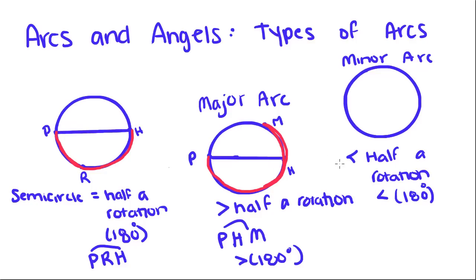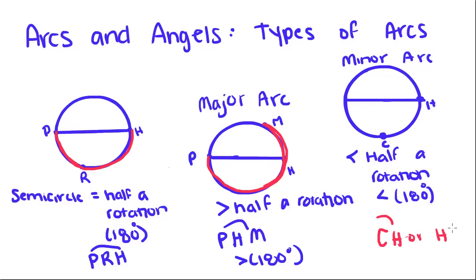And a minor arc is less than half a rotation, so it's less than 180 degrees. So this arc we have right here would be arc C, H — or you can do H, C, it doesn't matter. This arc right here is less than a semicircle arc.